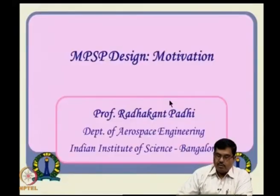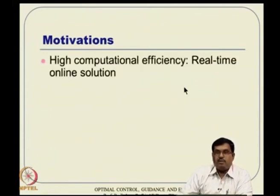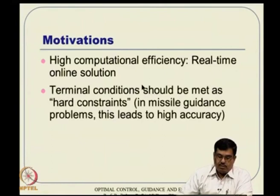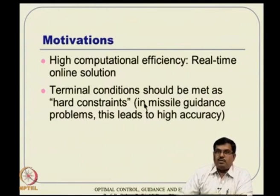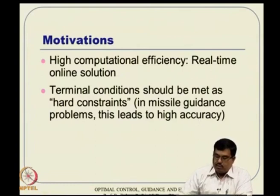The first motivation is high computational efficiency — what we are looking for is some sort of real-time online solution. The second thing is that terminal conditions should be met as hard constraints. Especially in missile guidance problems, this leads to high terminal accuracy. If you are working on a missile guidance problem, the very first thing you want is to go towards the target as close as possible, and hard constraints are typically much better for achieving that.